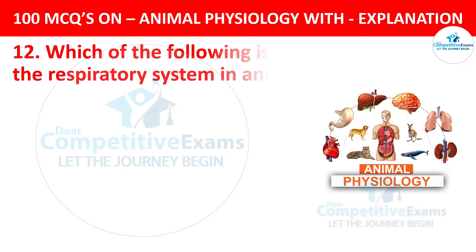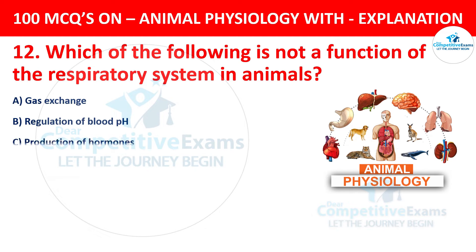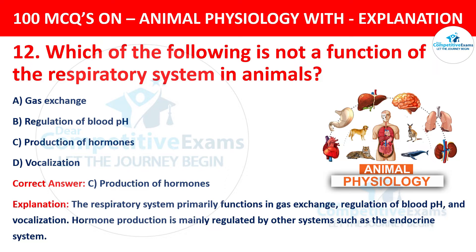Question number 12. Which of the following is not a function of the respiratory system in animals? The options are gas exchange, regulation of blood pH, production of hormones, or vocalization. The correct answer is C, production of hormones. The respiratory system primarily functions in gas exchange, regulation of blood pH, and vocalization. Hormone production is mainly regulated by other systems such as the endocrine system.